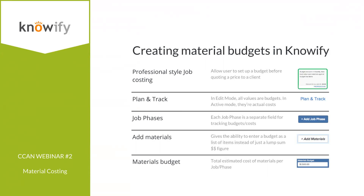The add materials button appears in every job phase when building a budget. This lets you set up an itemized budget — not just a dollar figure, but an actual list of materials like a hundred studs of lumber or 200 sheets of ply. The materials budget field is what we track all actual costs against, giving you more detailed reporting than just over or under budget.